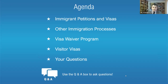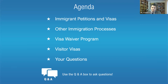Thank you to all of you who have joined us. It looks like we have almost 200 people — great to have such a big audience. So first, let's talk about what we're going to cover. We're going to talk about immigrant petitions and the visas that result from them, other immigration processes to the U.S., the visa waiver program and visitor visas for the U.S., and then we'll go through your questions. Feel free to put your questions in the Q&A box as we go along.